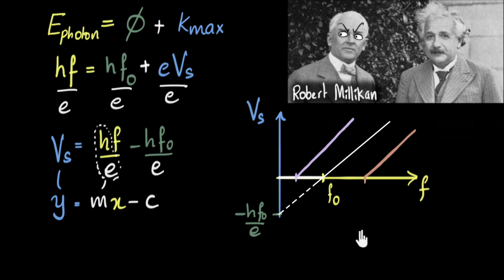But turns out that Millikan was still not convinced. Even after experimentally proving it, he still remained a skeptic. Just goes to show how revolutionary and how difficult it was to adopt this idea of quantum nature of light back then.